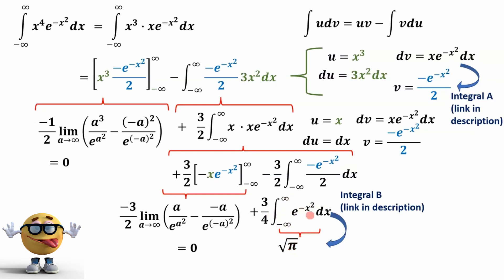But this integral here from negative infinity to infinity is root pi. So this whole thing is three times root pi divided by four, which is our integral. The integral of x to the fourth times e to the negative x squared from negative infinity to infinity is three quarters times root pi.